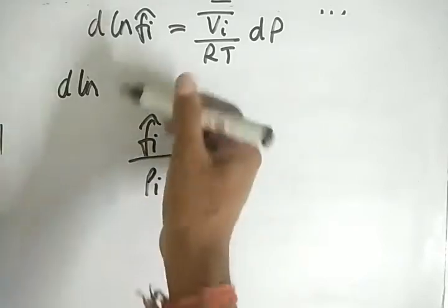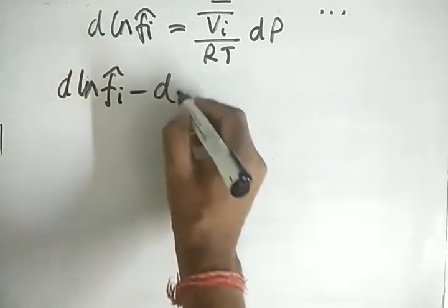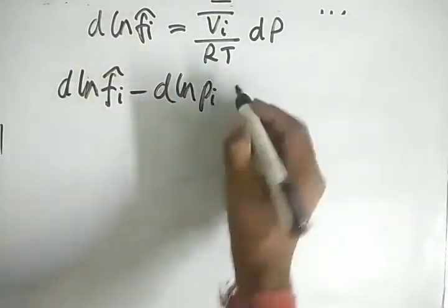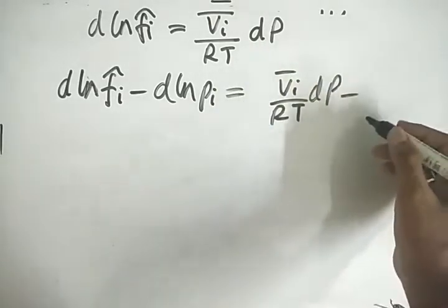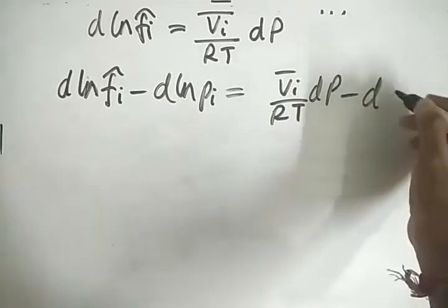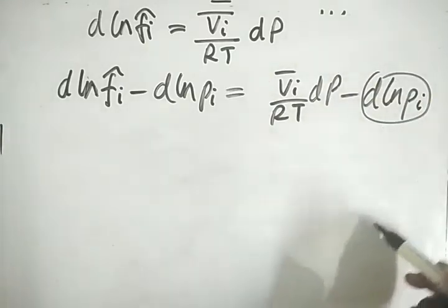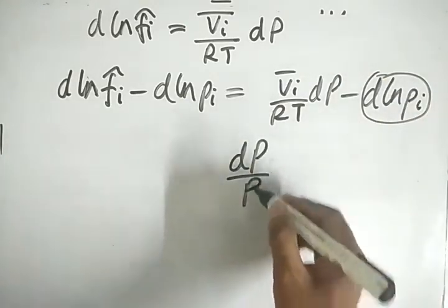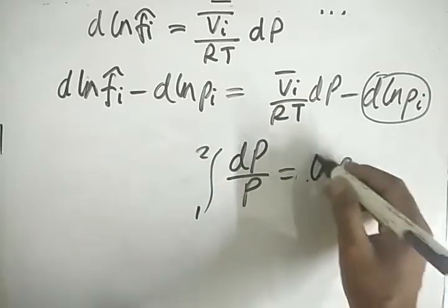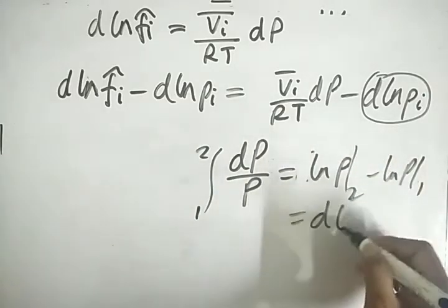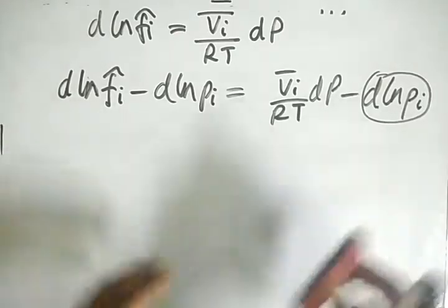Since φi-cap = fi-cap / pi, where pi is the partial pressure, we use the property of logarithms and subtract d(ln pi) from both sides. Noting that integrating dp/p gives ln p, and using limits from state 1 to state 2, we can write d(ln pi) = dp/pi.